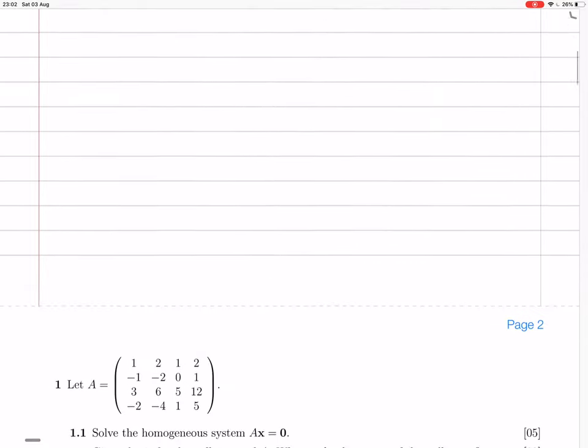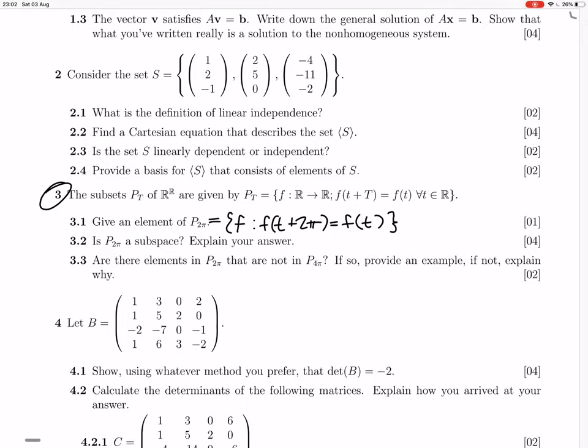Okay, so that was all we had to do for that question, 3.2? Yes. 3.3. Are there elements in P2π that are not in P4π? So, are there things that satisfy this that don't satisfy that?